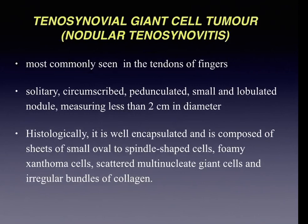The tenosynovial giant cell tumor, also called nodular tenosynovitis, is a benign lesion most commonly seen in the tendons of fingers. It occurs as a solitary, circumscribed, small lobulated nodule generally measuring less than 2 centimeters in diameter. Histologically, it shows a well-encapsulated mass composed of sheets of small oval to spindle-shaped cells, along with foamy xanthoma cells, scattered multinucleate giant cells, and irregular bundles of collagen.